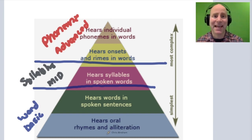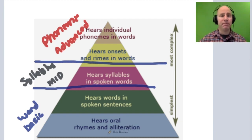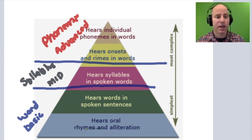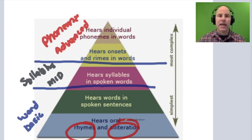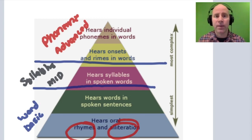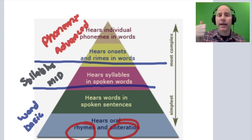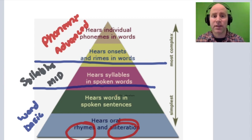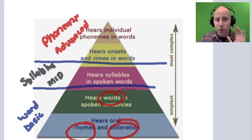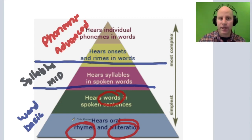If a child can hear that words rhyme — like cat, hat, sat — or have alliteration, like 'Peter Piper picked a peck of pickled peppers,' this would be basic phonological awareness. Similarly, if you say a sentence like 'How are you?' and ask a preschooler how many words are in it, and they say three — that's also basic, dealing with individual words.